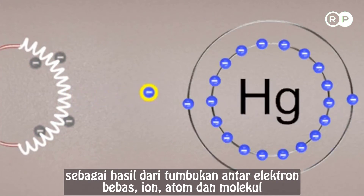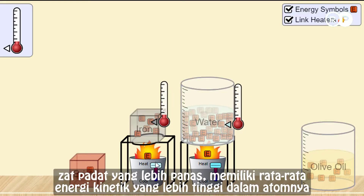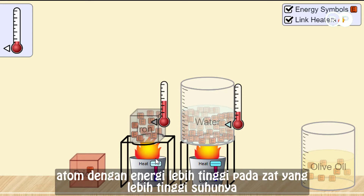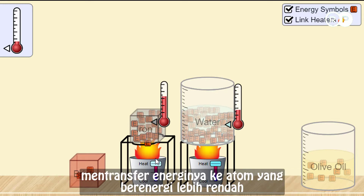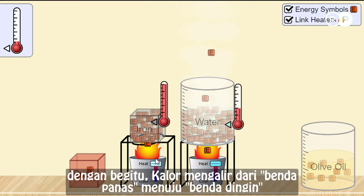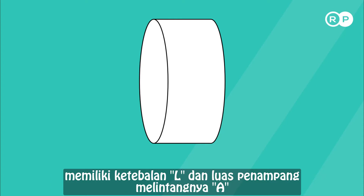The hotter a substance, the higher the average kinetic energy of each atom. When a temperature difference exists between materials in contact, the higher energy atoms in the warmer substance transfer energy to the lower energy atoms in the cooler substance when atomic collisions occur between the two. Heat flows from hot to cold.